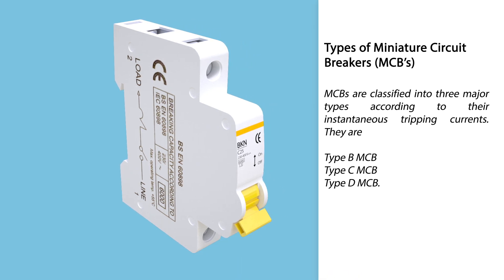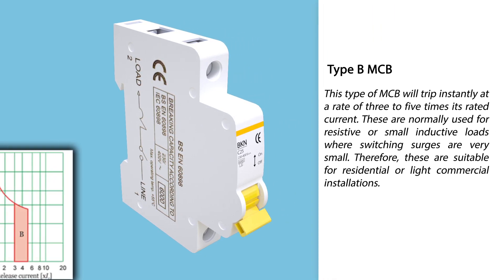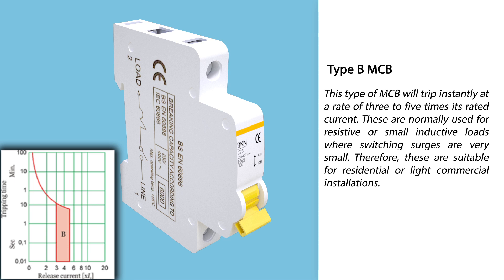Miniature circuit breakers are classified into three major types according to their instantaneous tripping currents: Type B, Type C, and Type D. Type B MCBs will trip instantly at three to five times their rated current. These are normally used for resistive or small inductive loads where switching surges are very small, making them suitable for residential or light commercial installations.